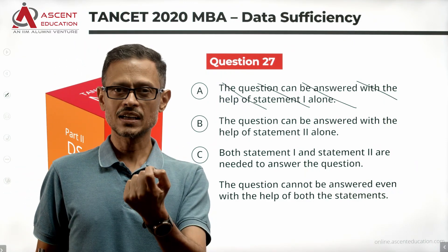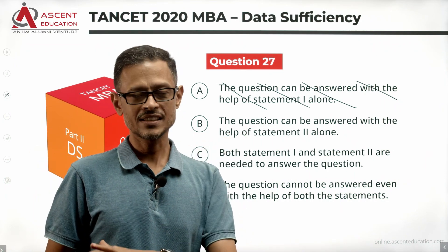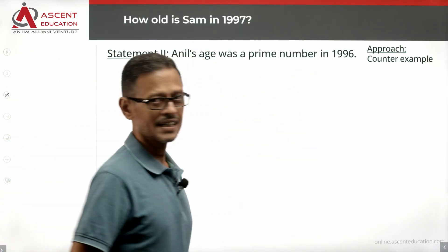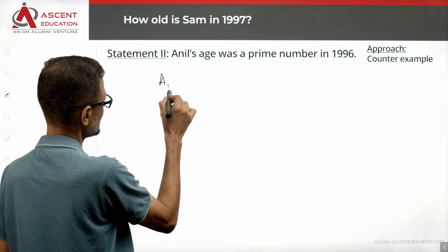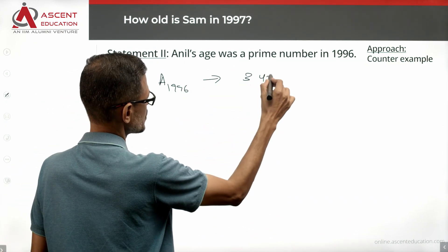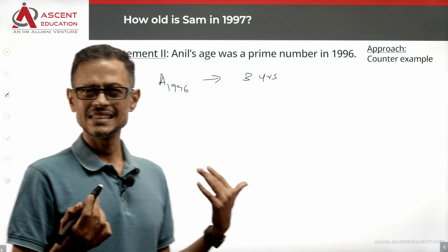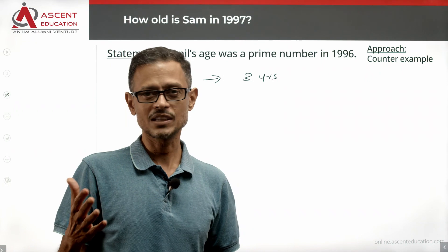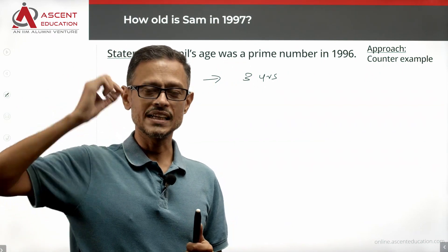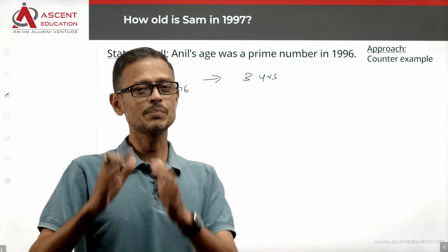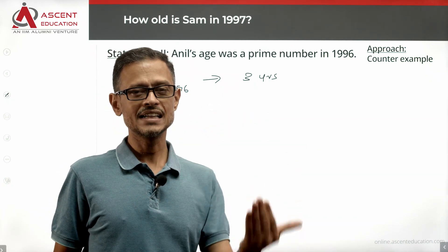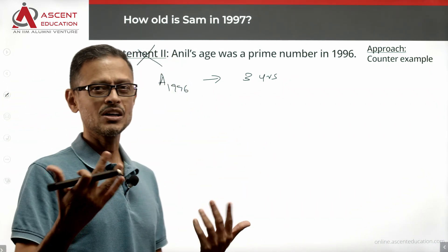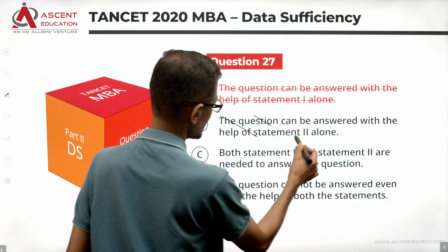Let's evaluate Statement 2 alone. If you are able to come up with a unique answer using Statement 2, we go with B. However, Statement 2 alone gives no relation between Sam and Anil, so we will not be able to find a unique value for Sam's age in 1997. Statement 2 alone is also not sufficient, and we can eliminate answer option B.